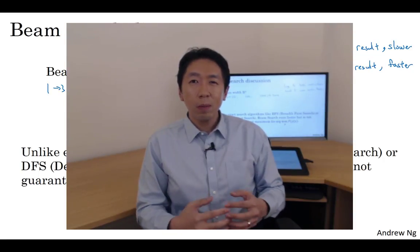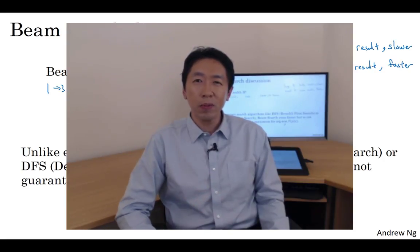So that's it for beam search, which is a widely used algorithm in many production systems or in many commercial systems. Now, in the third course in this sequence of courses on deep learning, we talked a lot about error analysis. It turns out one of the most useful tools I've found is to be able to do error analysis on beam search. So you sometimes wonder, should I increase my beam width? Is my beam width working well enough? And there's some simple things you can compute to give you guidance on whether you need to work on improving your search algorithm. Let's talk about that in the next video.